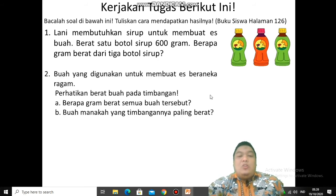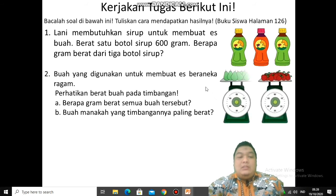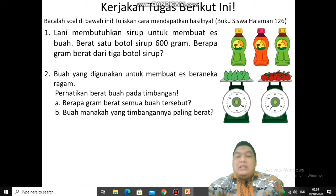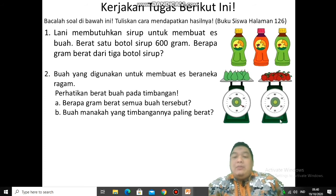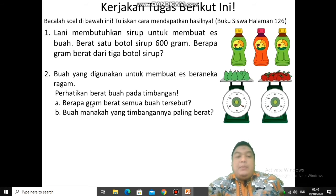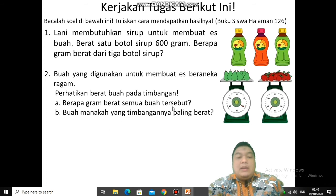Nomor 2: buah yang digunakan untuk membuat es beraneka ragam. Coba kalian perhatikan berat buah pada timbangan — ada alpukat dan stroberi. Kalian bisa melihat jarum timbangannya menunjukkan ke angka berapa. Satuannya kilogram: berat alpukat 20 kilo, berat stroberi sekitar 35 kilo. Yang pertama: berapa gram berat semua buah tersebut? Tinggal dijumlahkan. Yang kedua: buah manakah yang timbangannya paling berat?